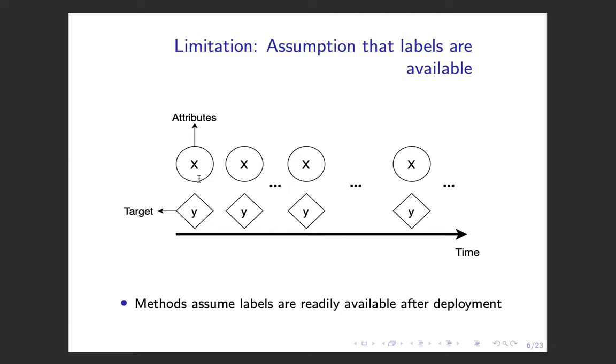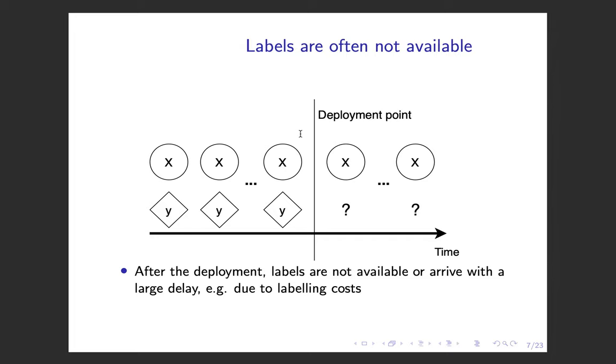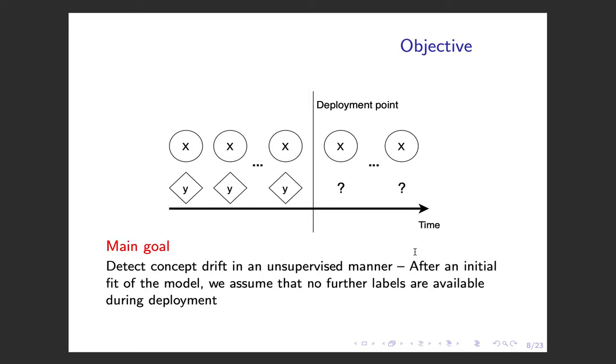We depict this idea showing the X's, which are the attributes, and the Y's, which are the target labels, available at all times. When in fact, after some deployment point, after we train a predictive model with training data and deploy the model, we often only have access to the attributes and not to the labels. This may be due to high labeling costs or labels coming with a large delay. In this context, our goal is to detect concept drift in an unsupervised manner.